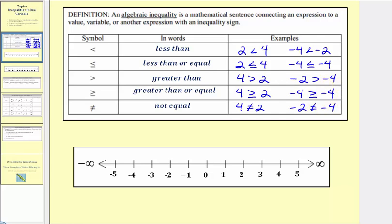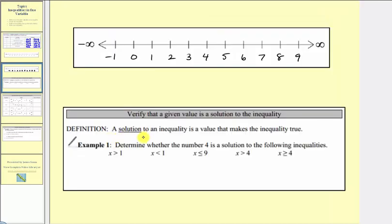Now let's talk about the solutions to an inequality. A solution to an inequality is a value that makes the inequality true. For example, we're asked to determine whether the number four is a solution to the following inequalities. We'll substitute four for x and see if the inequality is true or false. For x greater than one, substituting gives four greater than one — four is greater than one, so this is true, meaning four is a solution.